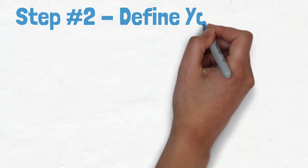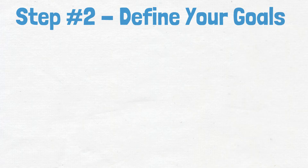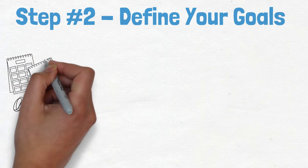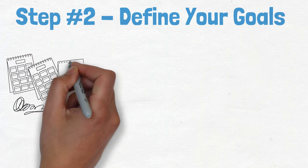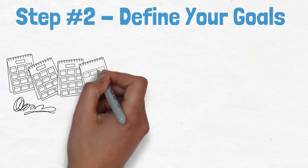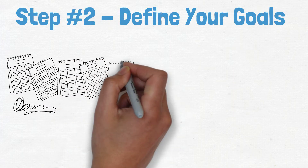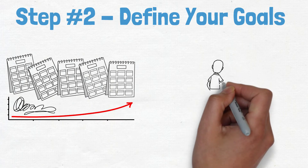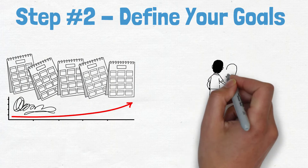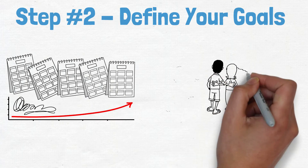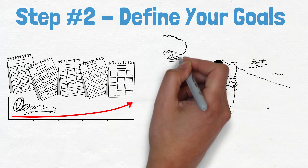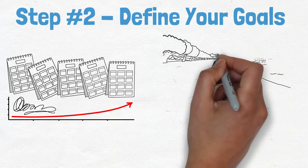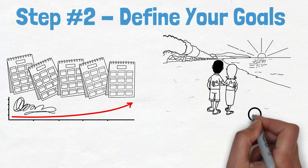Step number two: define your goals. What do you want to accomplish in the next six months, three years, or five years? This is your retirement plan, so it's up to you how far out you want to plan. Maybe your goal is something simple, like learning more about investing, or maybe it's something a little bigger, like buying a second home in Florida on the beach.